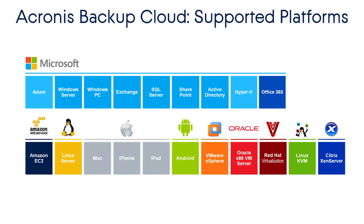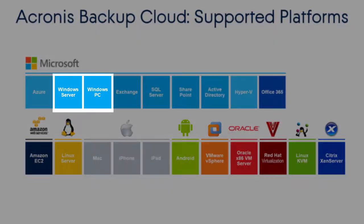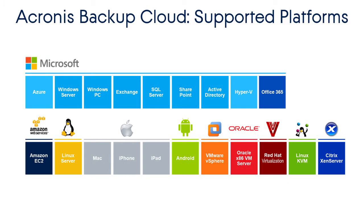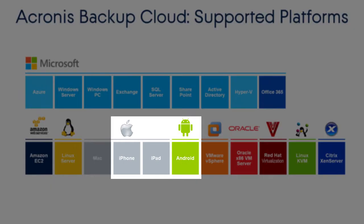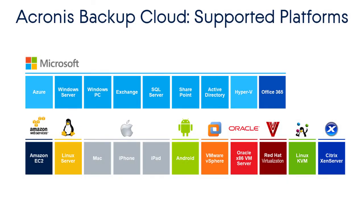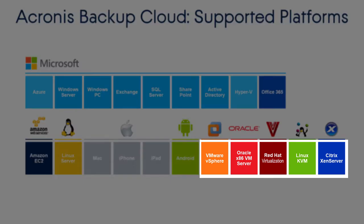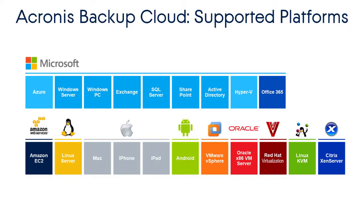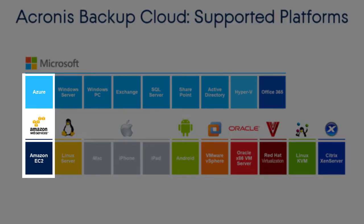Acronis Data Cloud provides a wide range of backup services for various platforms. Along with traditional backup services such as backup of Windows machines and servers, Acronis Data Cloud supports backup of mobile devices and application-aware backup of Microsoft Exchange, Microsoft SQL Server, and Microsoft SharePoint. Moreover, it allows for backup of virtualization platforms such as Hyper-V, VMware vSphere, Citrix XenServer, and Linux KVM. Finally, it also supports backing up Office 365 mailboxes and cloud instances powered by Amazon EC2 and Azure.